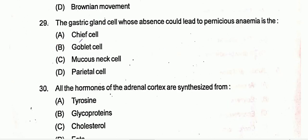Question twenty-nine: the gastric gland cell whose absence could lead to pernicious anemia — pernicious anemia is caused by absence of the parietal cell. By means of absence of the parietal cell, it leads to the severe disease pernicious anemia.